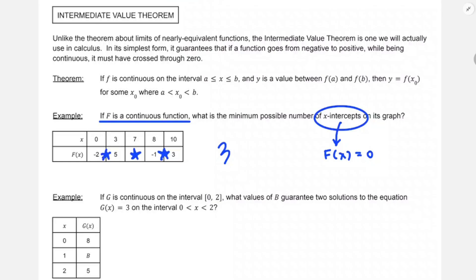And then if g is continuous on the interval 0 to 2, what values of b guarantee two solutions to g of x equals 3 on the interval 0 to 2? I think this is one I might draw a picture of. It's really easy to see if you draw a picture. Okay, so what I'm going to need to do is mark 2. 0 is kind of already marked, and so I'm going from 8 down to 5. I might also mark 3, because that's something we're interested in.